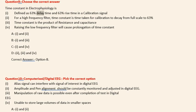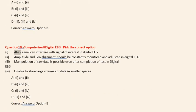Question 9: Choose the correct answer. Time constant in electrophysiology is: (i) Defined as 63% delay time and 63% rise time in a calibration signal. (ii) For a high frequency filter, time constant is time taken for calibration to decay from full scale to 63%. (iii) Time constant is the product of resistance and capacitance. (iv) Raising the low frequency filter will cause prolongation of time constant. Options: A. i and ii, B. i and iii, C. i and iv, D. ii, iii and iv. Correct answer: Option B.